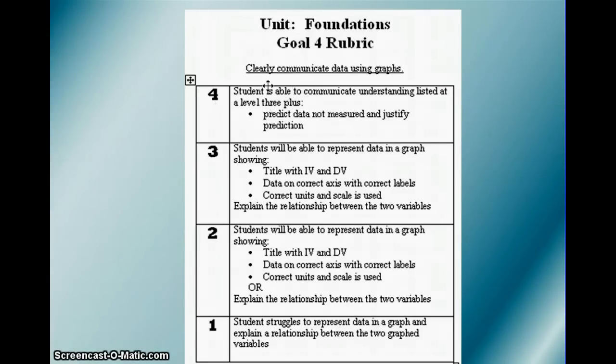Our goal here is to clearly communicate data using graphs. In order to meet this goal, students will be able to represent data in a graph. In that graph, you need to show your title with your independent and dependent variable in the title. Your data is on the correct axis with the correct labels and you have correct units and scale, and you are able to explain the relationship between the two variables.